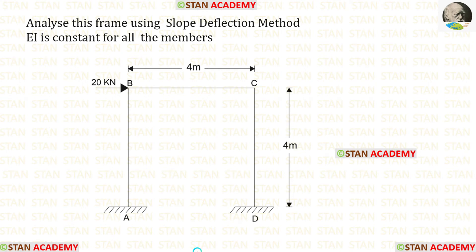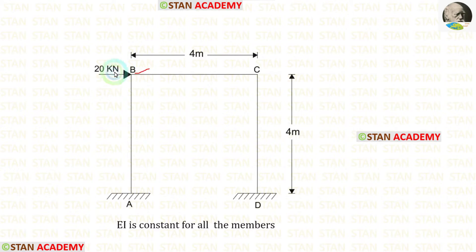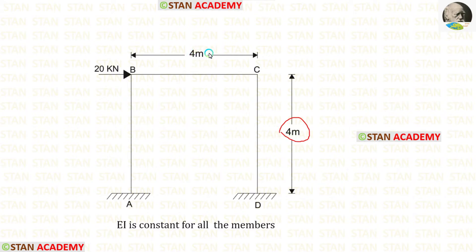Hello everyone. Today we are going to analyze this frame using the slope deflection method. In this frame there are two columns: column AB and column CD. There is also a beam BC. At point B, there is a nodal point load of 20 kilonewtons acting towards the right side. The height of the columns is 4 meters, the length of the beam is also 4 meters, and the flexural rigidity EI is given as constant for all members.